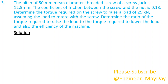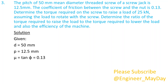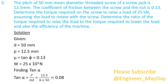Solution. Given: D equals 50 mm, P equals 12.5 mm, mu equals 0.13, W equals 25 times 10 to the power 3 newtons. Finding tan alpha, which equals 0.08.